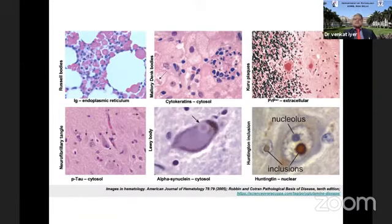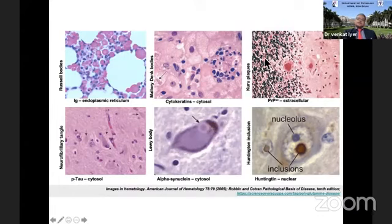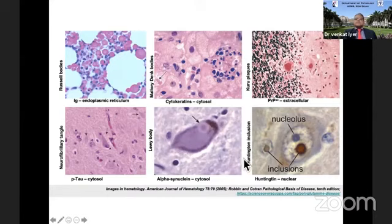Misfolded proteins are a pathognomonic feature of so many things in pathology — whether it's Russell bodies, Mallory-Denk bodies, Kuru plaques, neurofibrillary tangles, Lewy bodies, or Huntington's inclusions. All of these represent misfolded proteins.